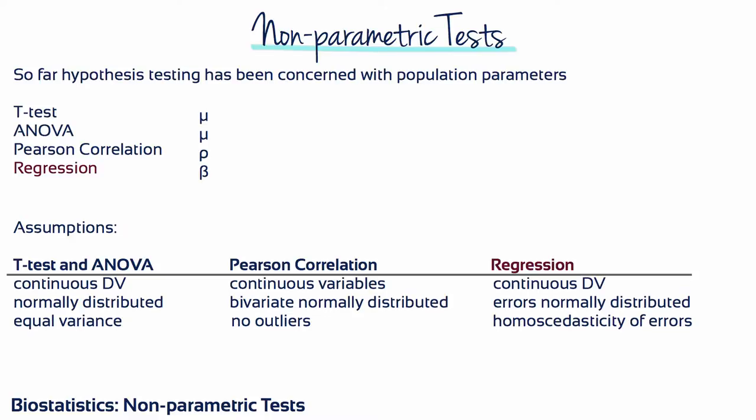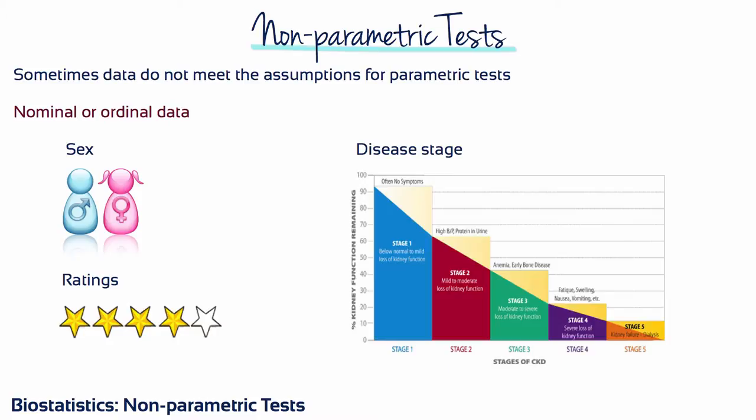When the assumptions for these tests are not satisfied, there are alternative tests referred to as nonparametric tests. Sometimes nonparametric tests are referred to as distribution-free tests because the distribution does not need to take a specific form. Nonparametric tests are often used when a variable is measured on a nominal or ordinal scale.